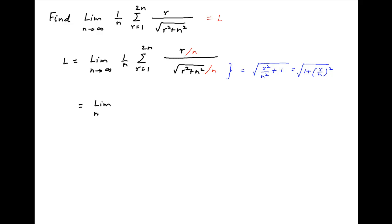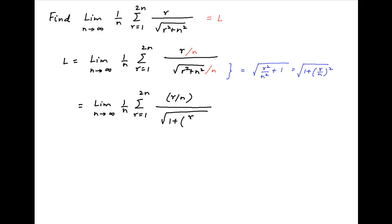The value of L is therefore equal to limit n tending to infinity, 1 upon n times summation r going from 1 to 2n, of r upon n divided by square root of 1 plus r upon n, whole square.